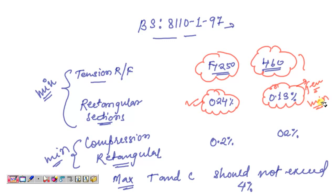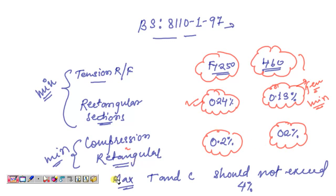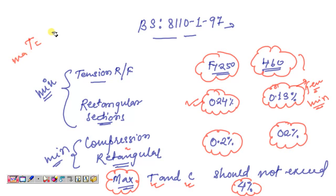For compression reinforcement in a rectangular section, the minimum percentage is the same for both fy = 250 and fy = 460, which is 0.2%. Regarding maximum reinforcement as per BS 8110 Part 1, 1997, both the tension reinforcement and compression reinforcement should not exceed 4%. So maximum tension reinforcement should not be greater than 4%, and maximum compression reinforcement should not be greater than 4%.